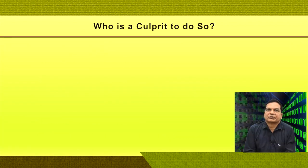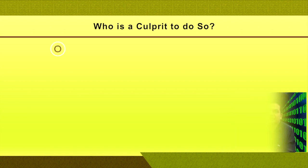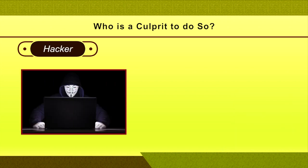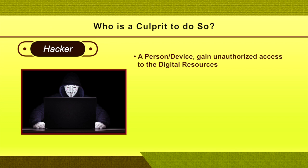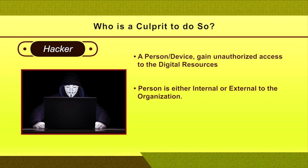Who is the culprit doing all such things? We call such a person a hacker. A hacker is a person or a device that gains unauthorized access to digital resources. A hacker need not be a person — it could even be a device, a script, or some software. Any form that does damage to the digital infrastructure is called a hacker. A hacker can be either internal or external to the organization.